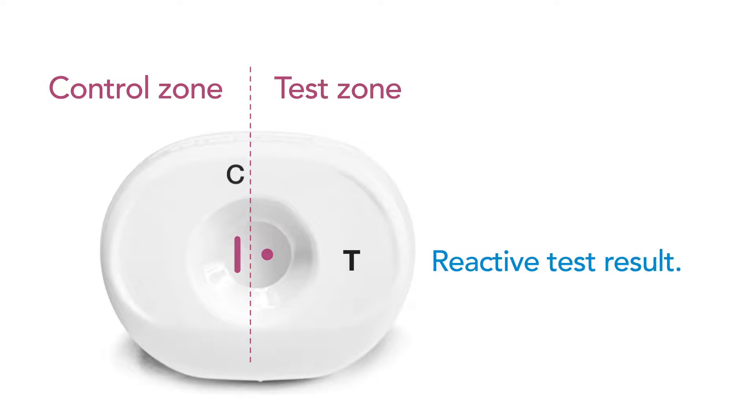A reactive result is shown with a distinct line or dot. A non-reactive result is shown with no line or dot.